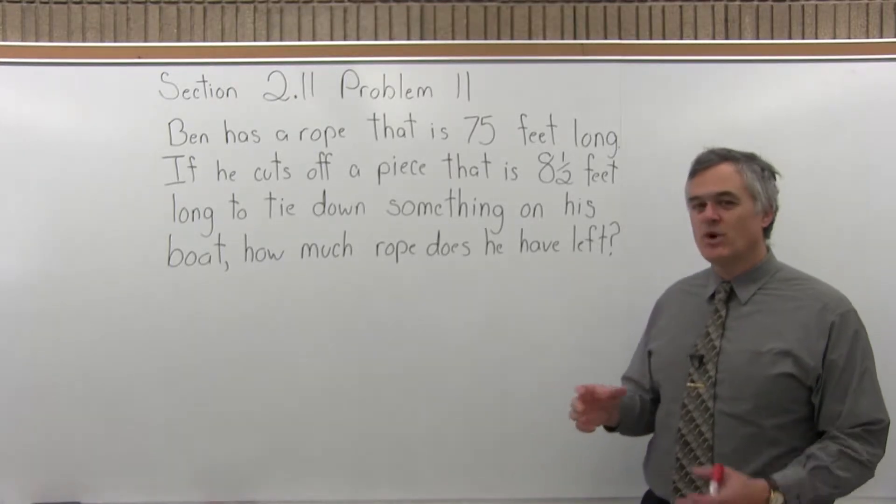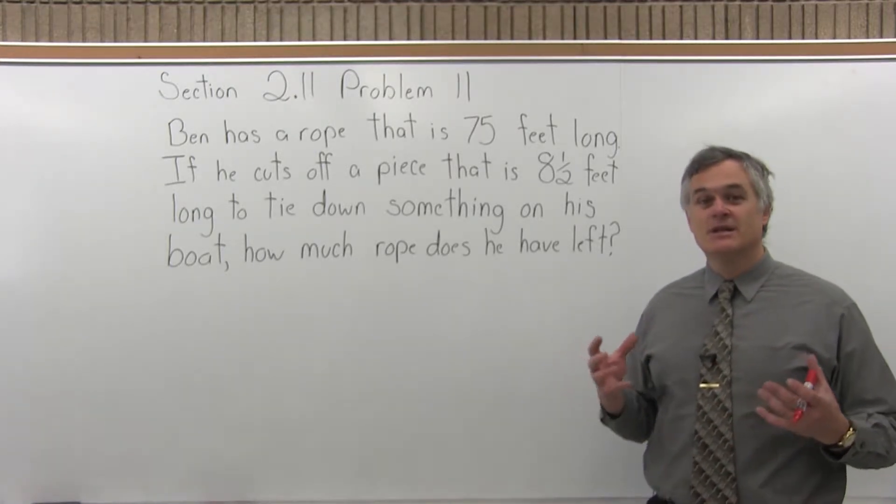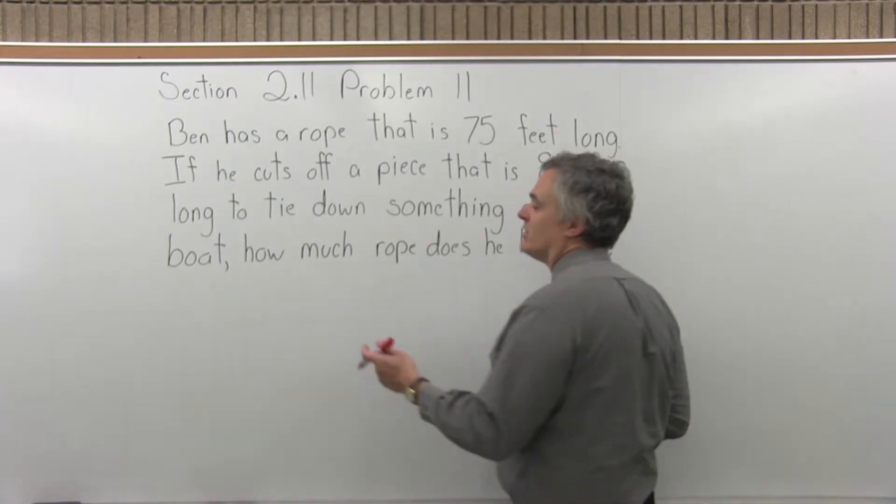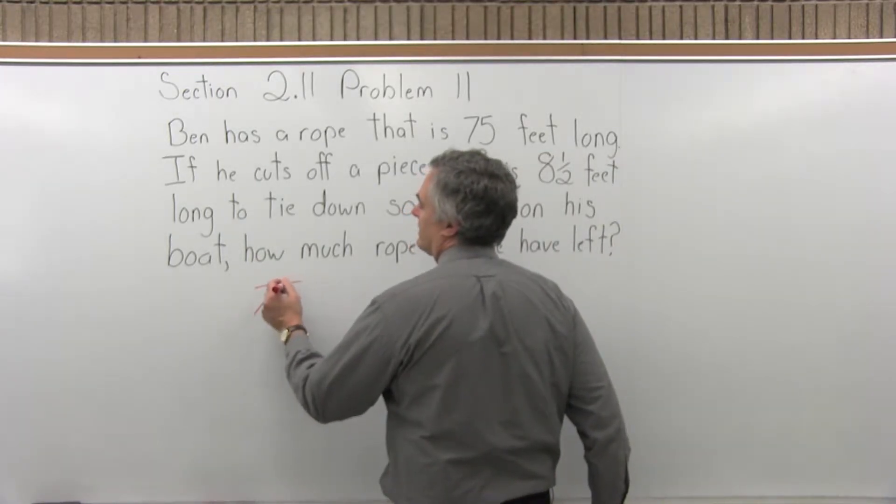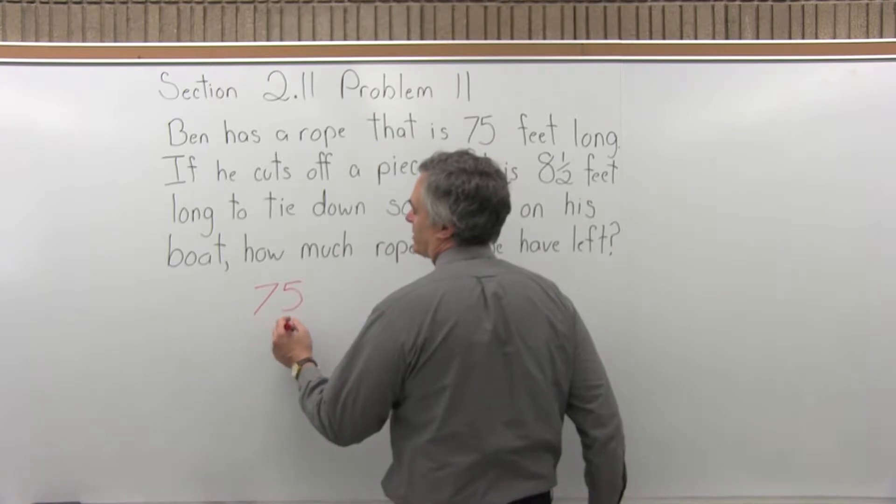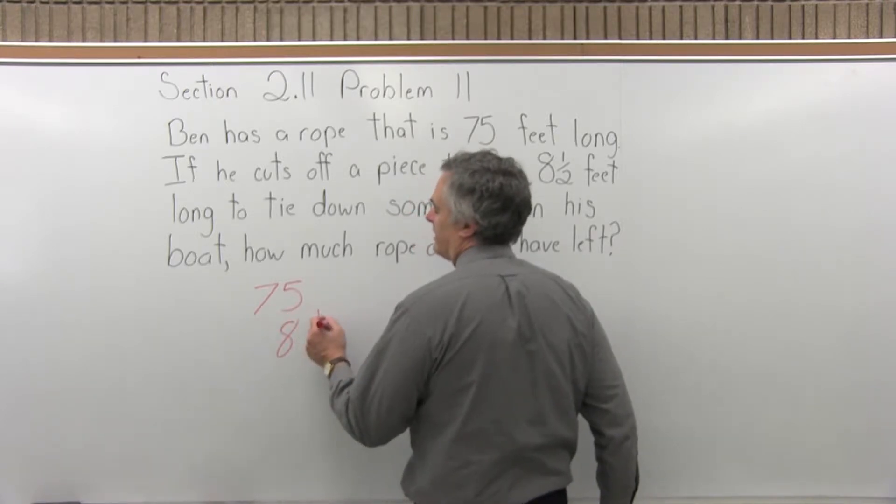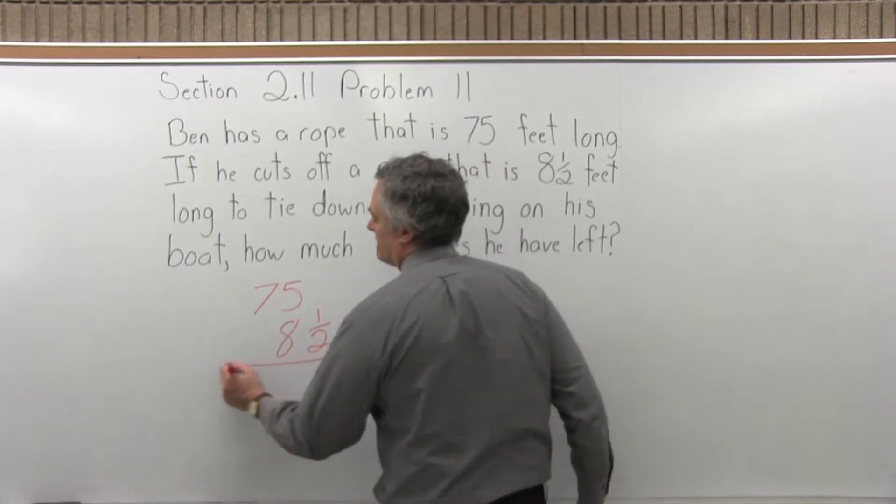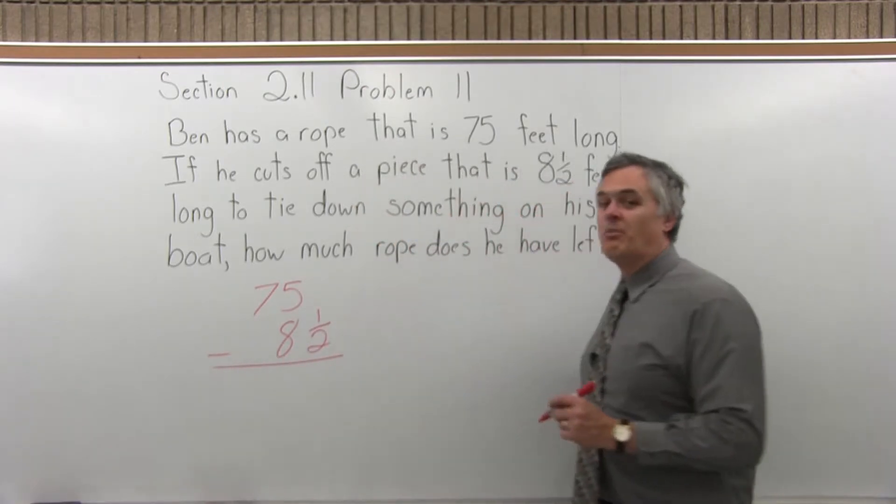So you have 75 feet of rope, and you're going to take away a piece that's 8.5 feet long. So to find the answer to that, we will subtract. And these problems where I do a subtraction, I like to write in the vertical format. I want to figure out 75 minus 8.5.